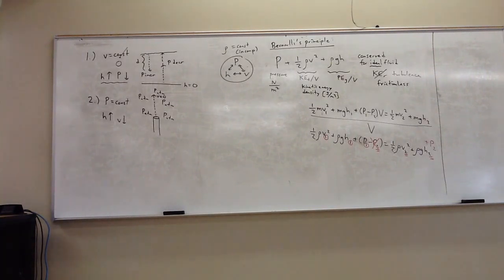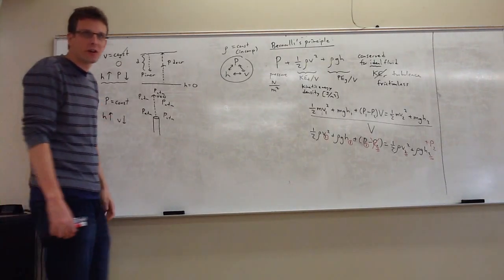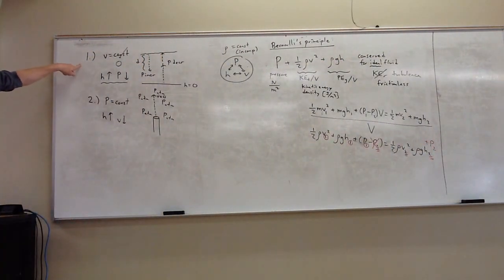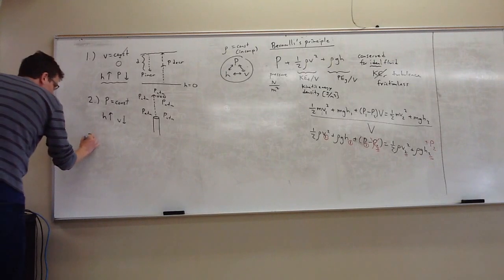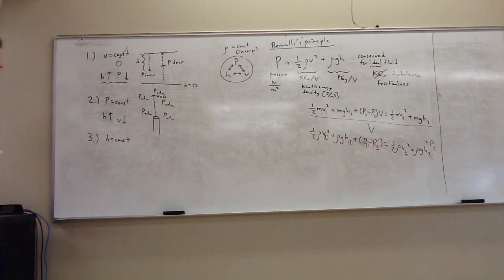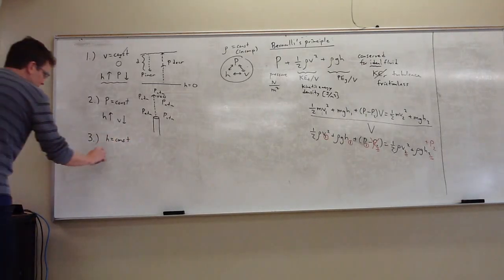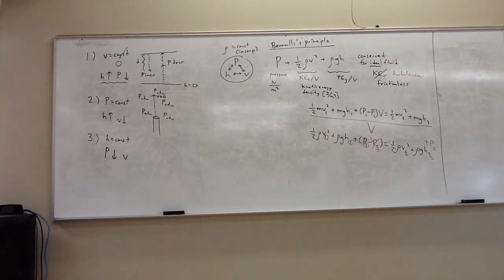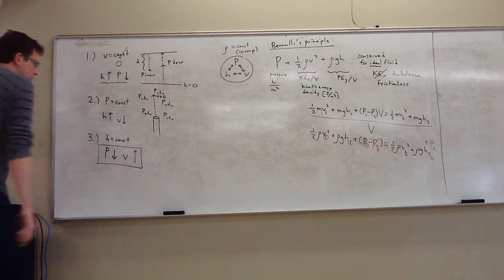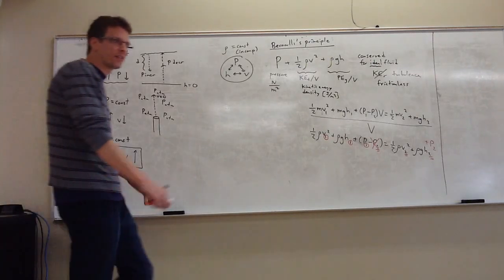We're taking the very thing that's new and interesting about Bernoulli's — the pressure — we're holding it constant, and then we're having the two very old familiar forms of energy trade off with each other. Let's now hold the height constant. If I decrease the pressure, the speed increases — the lower the pressure gets, the faster the speed gets.